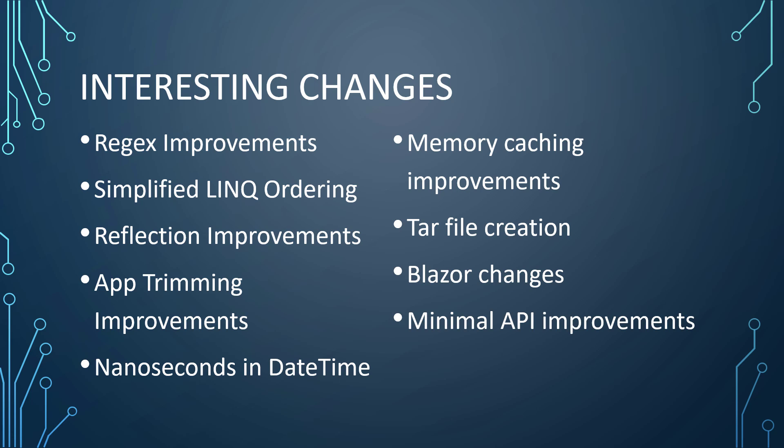Minimal APIs and API improvements in general have some really cool stuff, including output caching middleware, rate limiting, the ability to upload files in minimal API, improvements to OpenAPI in minimal APIs, route filter handling, and improved dependency injection. I do have some existing videos on minimal APIs covering what they are and the difference between a minimal API and a full API. There are also some additions in ASP.NET Core in general, such as nullable models for MVC and Razor pages.